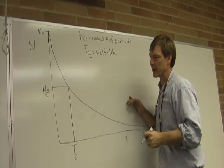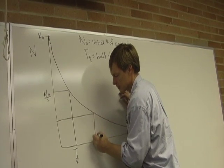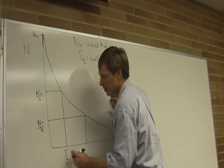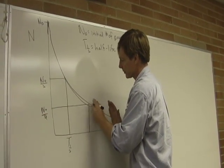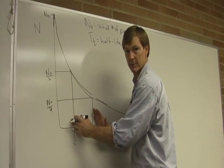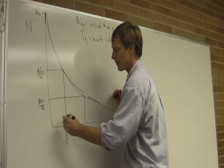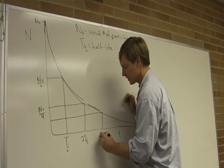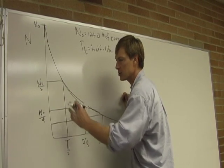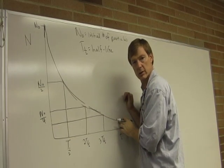Now, watch what happens next. Here I'm at n sub 0 over 2. Let me cut it in half again. Now, I've got n sub 0 over 4. But notice that, really, I didn't draw this quite right. It takes the same amount of time. And if I dump it in half again, the same amount of time transpires. So for each half-life, I lose half of what I started with. That's what an exponential curve does.